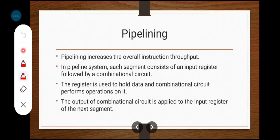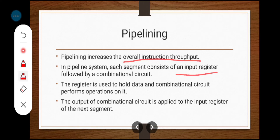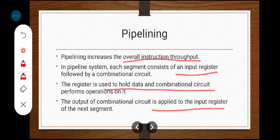Instructions enter from one end and exit from another end. This pipelining process mostly increases the overall instruction throughput. In a pipeline system, each segment consists of an input register followed by a combinational circuit. The combinational circuit is used to perform operations — whatever input we give, that input value is processed with the help of the combinational circuit. After execution, the result is stored in a register.